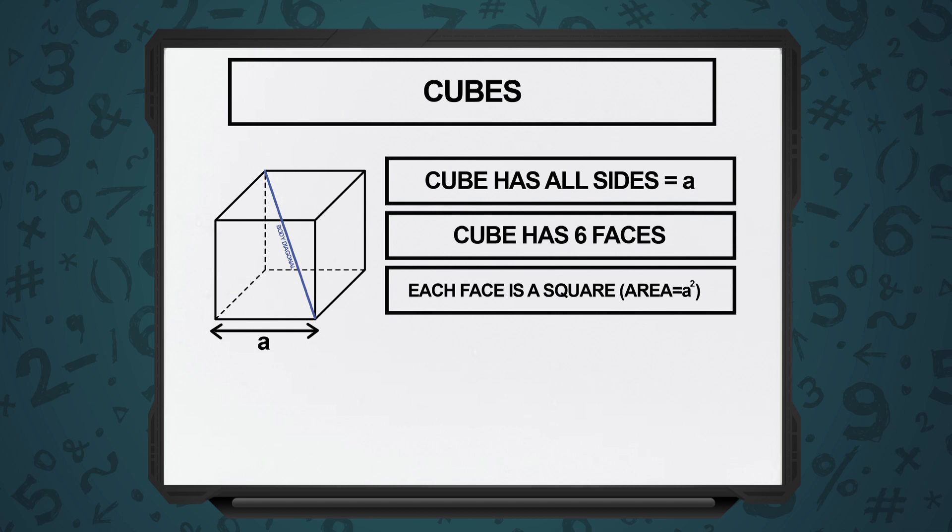As the name suggests, cube means it has the length, breadth and height. The moment we say three-dimensional figures, you would have x-axis, y-axis and a third one.